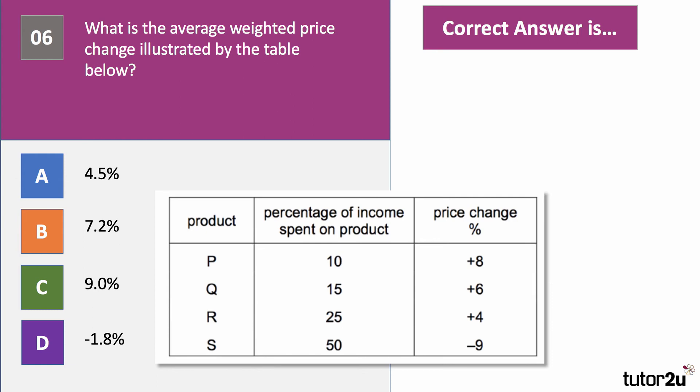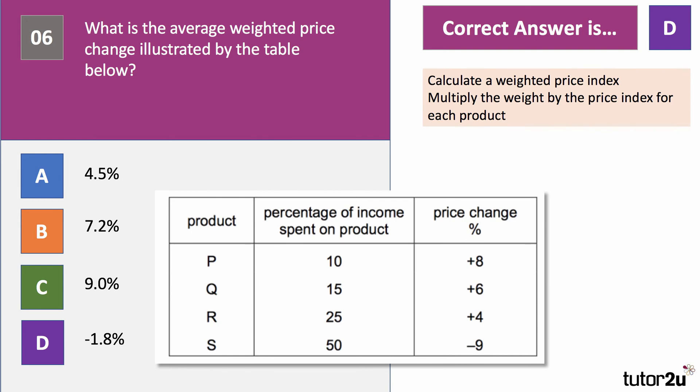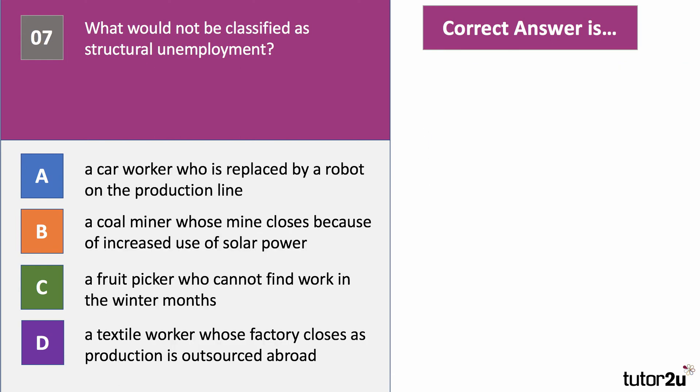This question tests your ability to calculate a weighted price index. The right answer is D — there was in fact deflation, in part because product S fell by nine percent in price and accounts for 50 percent of the index. To calculate a weighted price index, you multiply the weight (the percentage of income spent on each product) by the price index for that product. The price indices are: P = 108, Q = 106, R = 104, and S = 91. Multiply 10 by 108, 15 by 106, 25 by 104, and so on. Add those together and divide by 100 — the result comes to 98.2, which is 1.8 less than 100, confirming deflation.